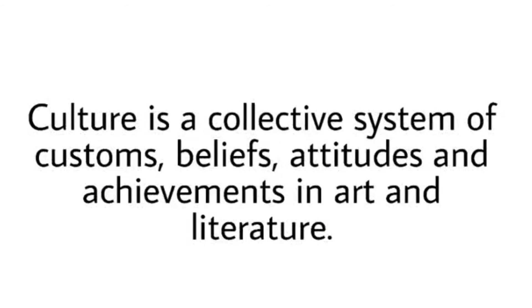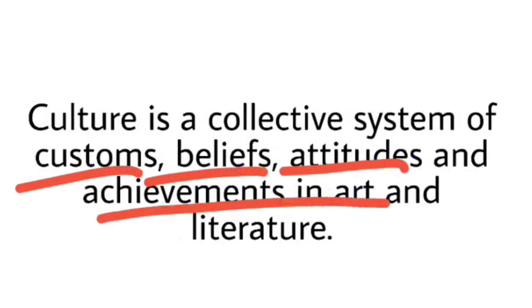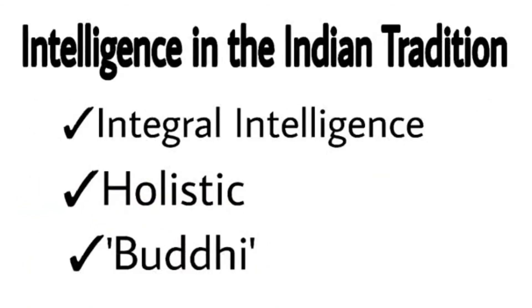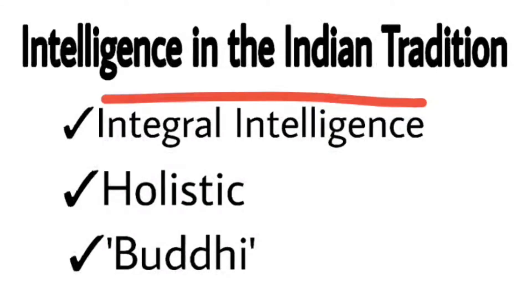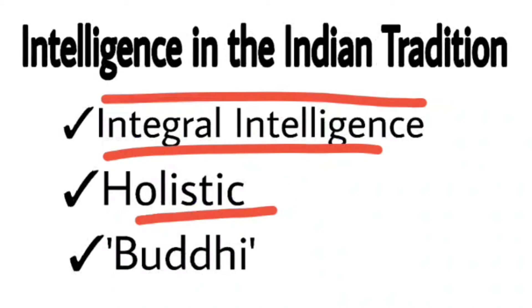Culture is a collective system of customs, beliefs, attitudes and achievements in art and literature. Har culture ke apne beliefs, customs, art aur literature hote hain - matlab har culture ek doosre se different hota hai. Ab hai intelligence in the Indian tradition. Technological intelligence ke opposite, jo intelligence Indian tradition mein hai usse integral intelligence kehte hain - kaafi sari cheezoin ka combination. Yahan intelligent person wahi nahi hota jo padhai mein achha hai, aur bhi bohot si cheezoin mein intelligent hona hota hai. Indian thinkers ke according intelligence holistic hai, aur yahan pe equally har cheez pe attention di jati hai.